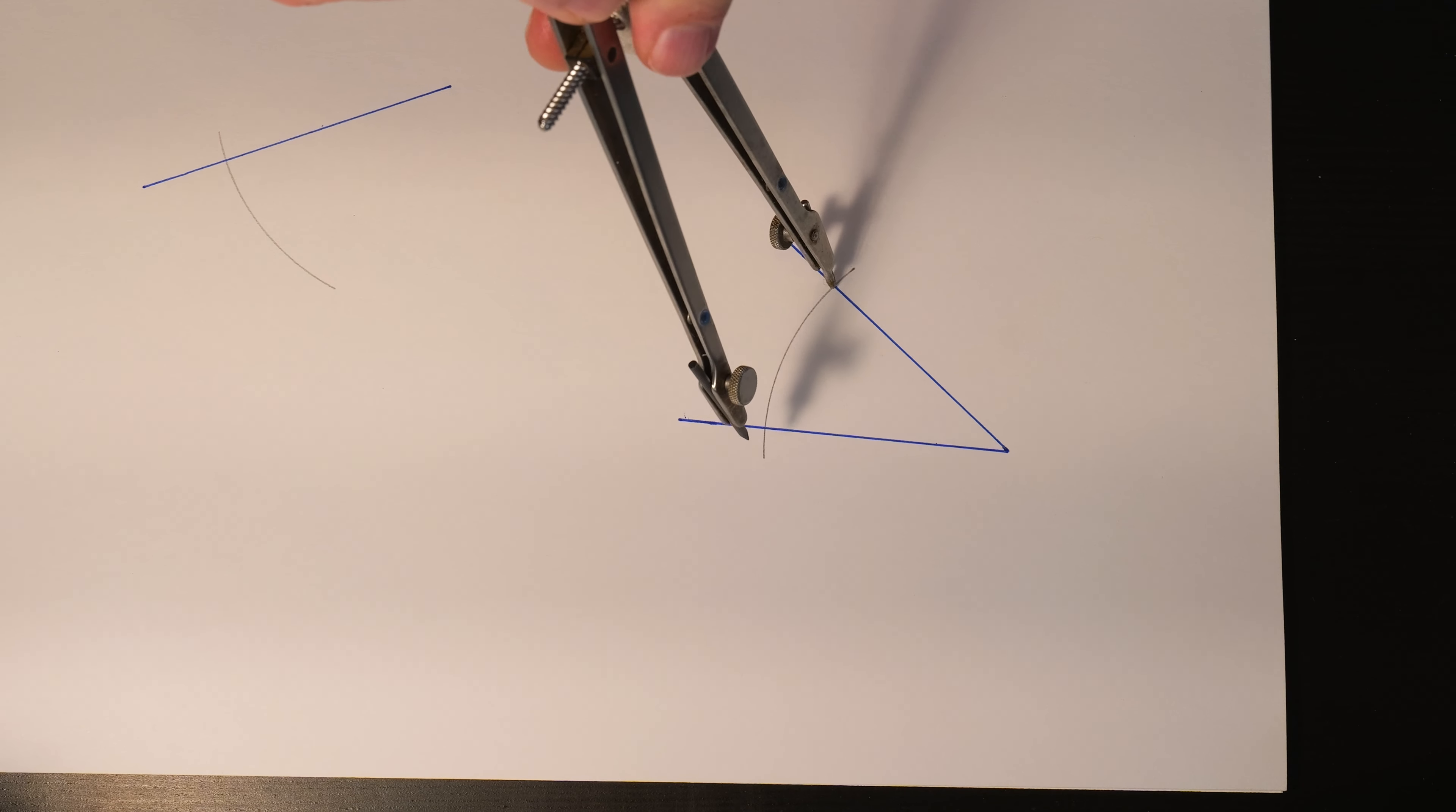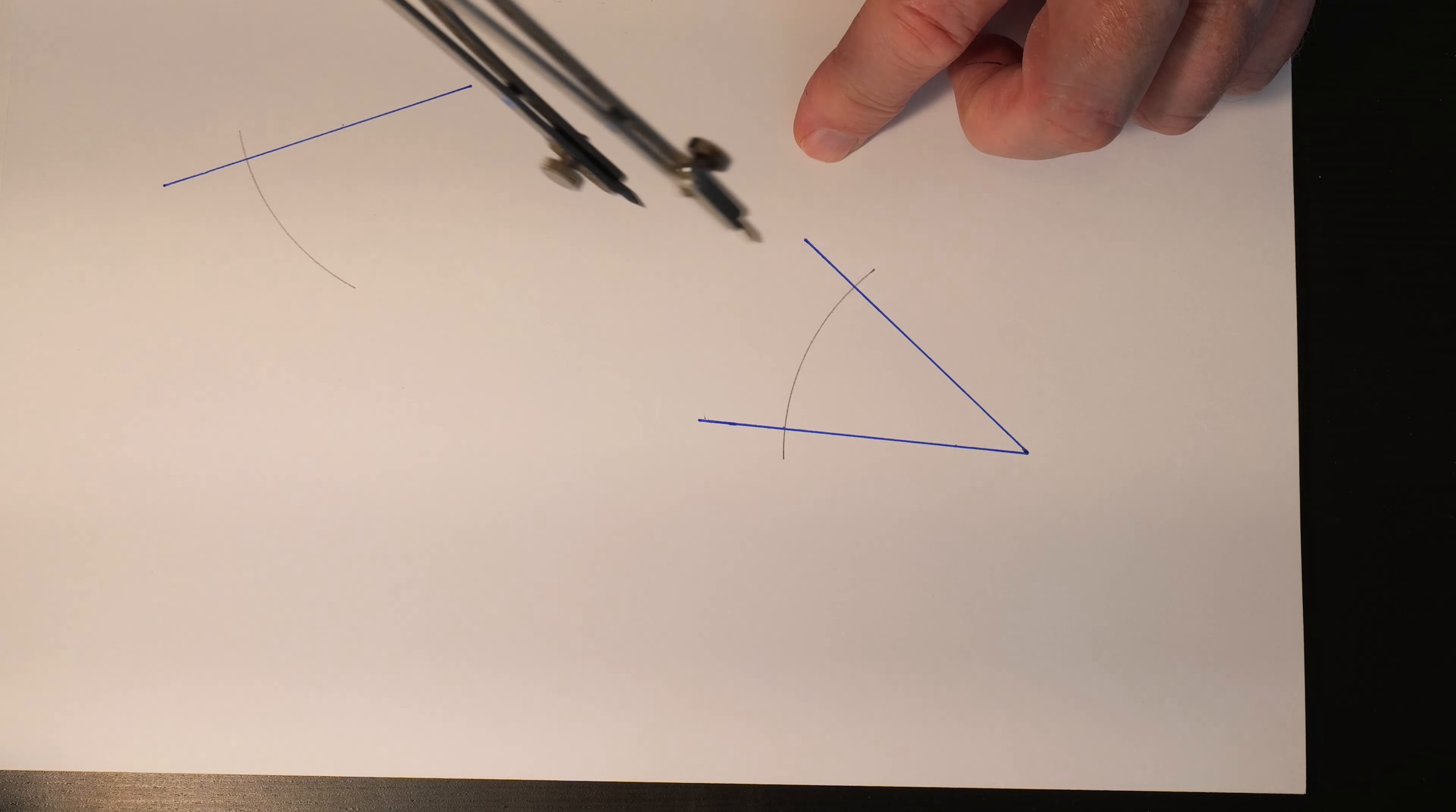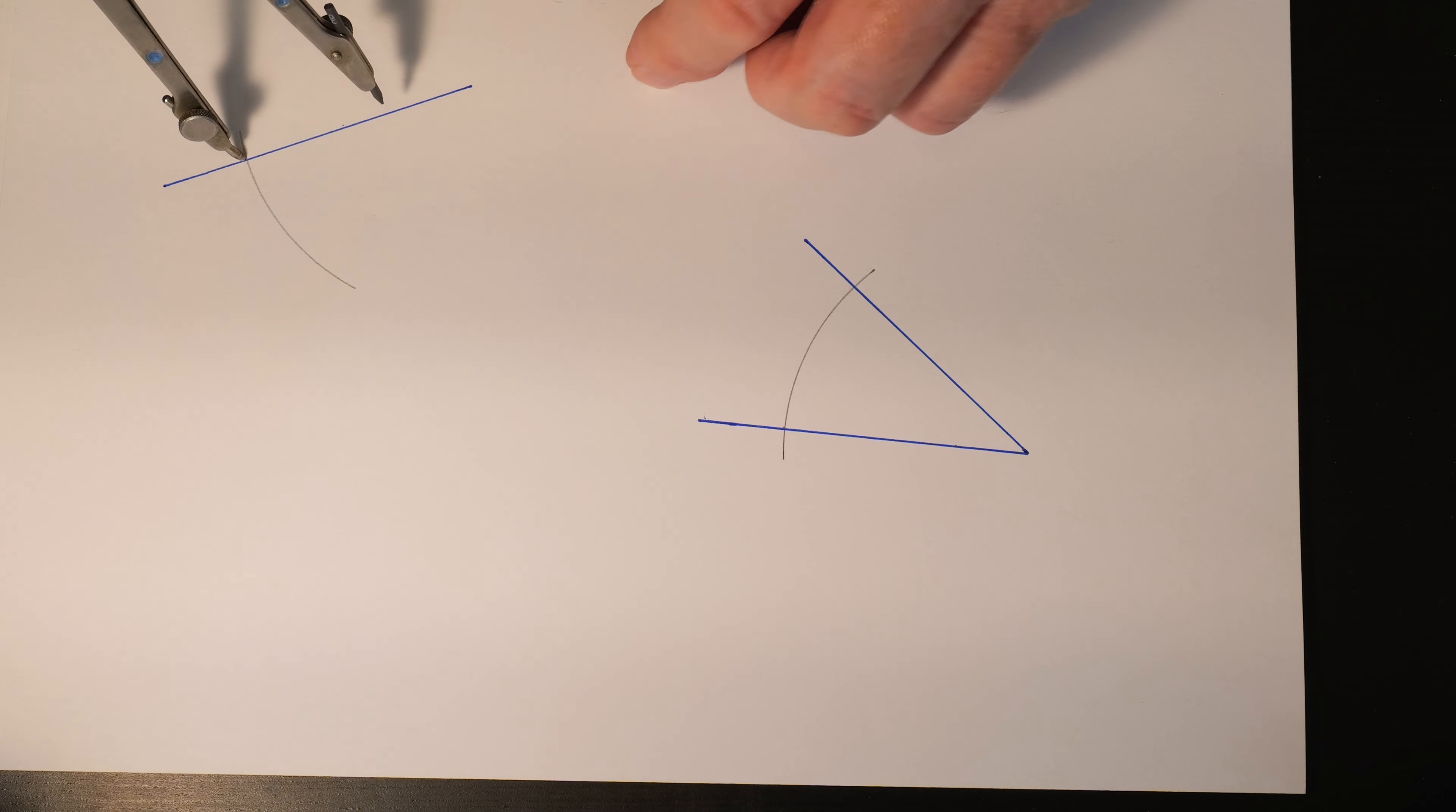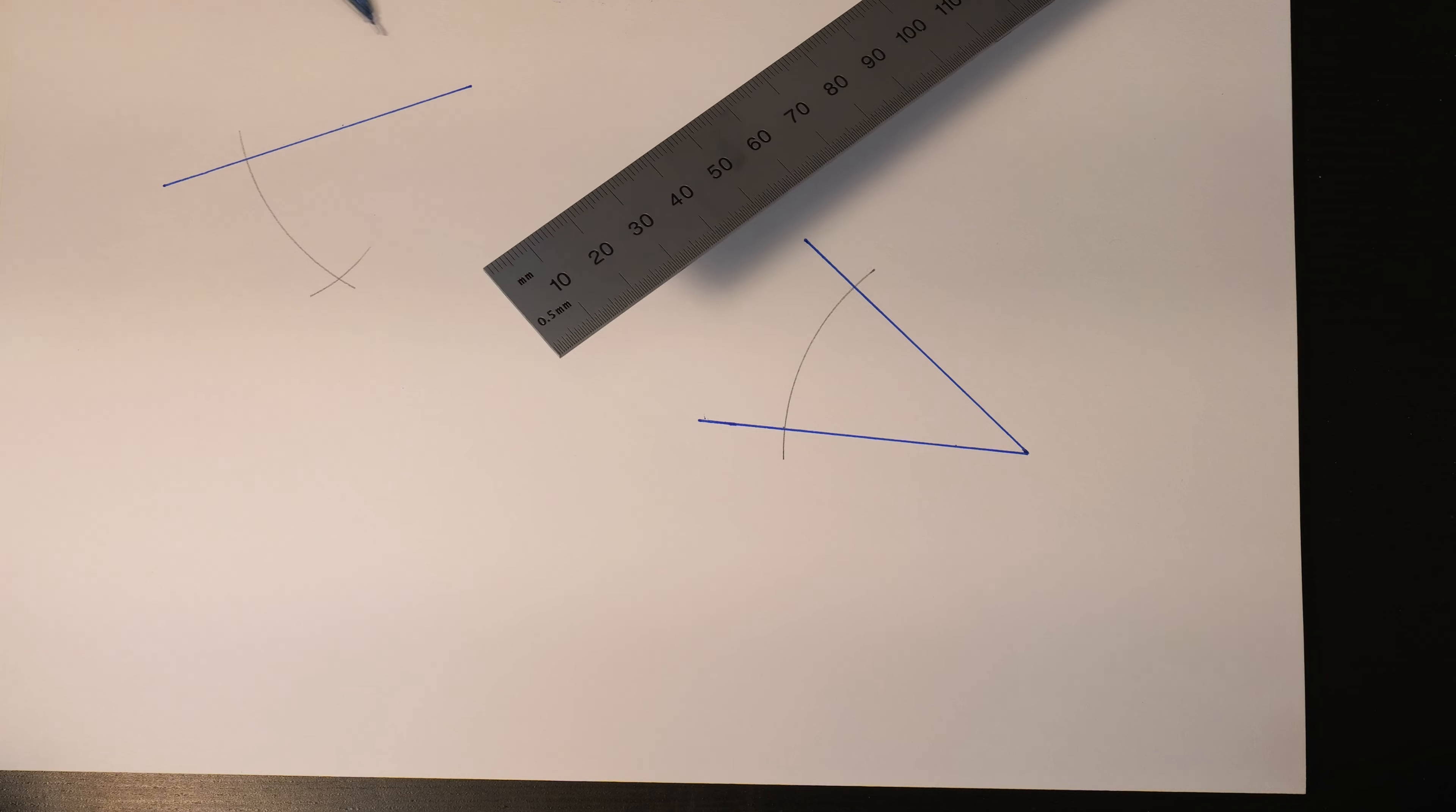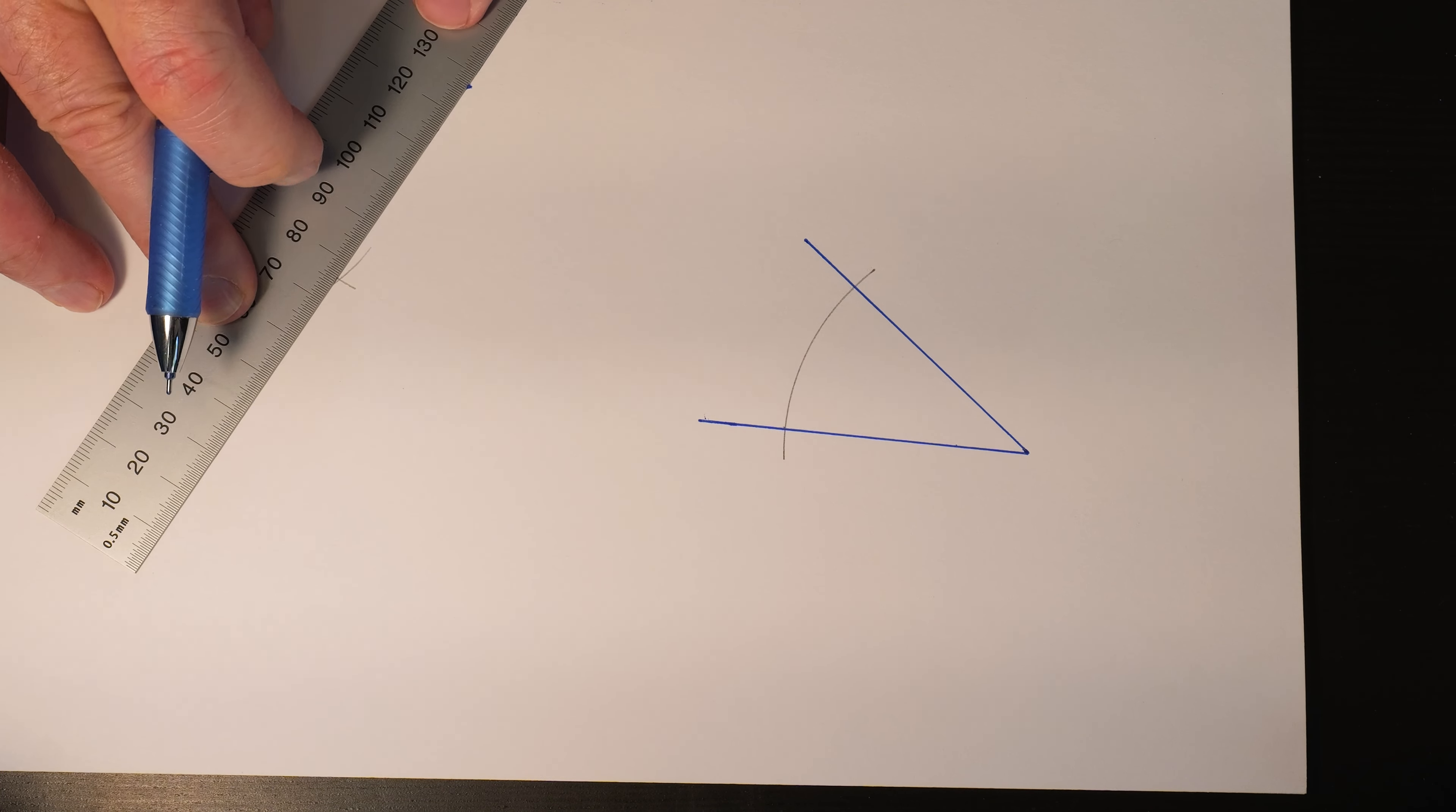Come back over here, set the point at the intersection, draw an intersecting arc. Now just connect the endpoint of your line with the intersecting point of those two arcs.